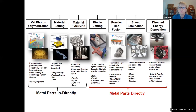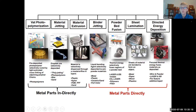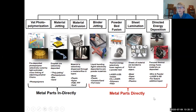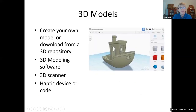Direct energy deposition uses focused thermal energy to fuse materials as they are deposited — this is the type used most often for complex metal 3D printing, using wire and powder with a laser. Powder bed fusion is very important, and directed energy deposition is important as well. So you have your powder, materials, laser, and equipment — now you need your 3D model.